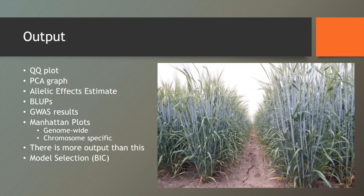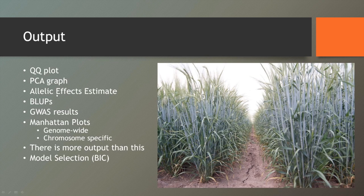And so some of the output that GAPIT generates, you'll see a QQ plot, PCA graph, allelic effect estimates, BLUPS, GWAS results. So there's a lot more information than just this, but this is what I'm going to cover because this is the basic stuff that you need to look at.